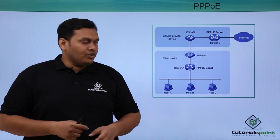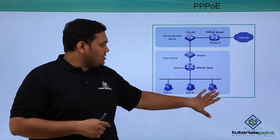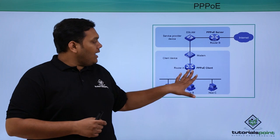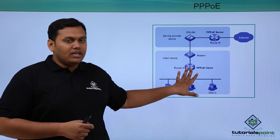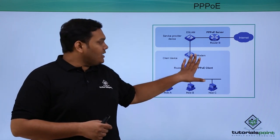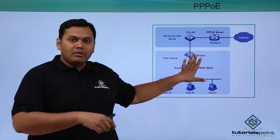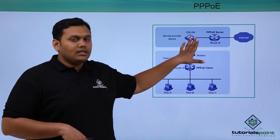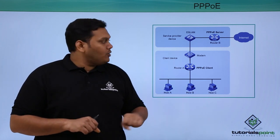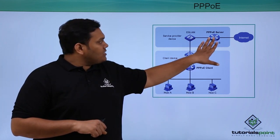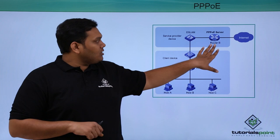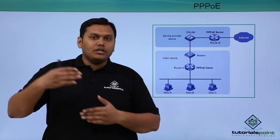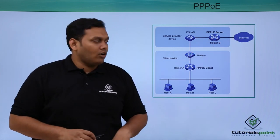This is how broadband works. Customers connect to a nearby router with a PPPoE client, which connects to the local client modem, then to the DSLAM for bandwidth balancing, and finally the PPPoE server in Router B connects to the internet.